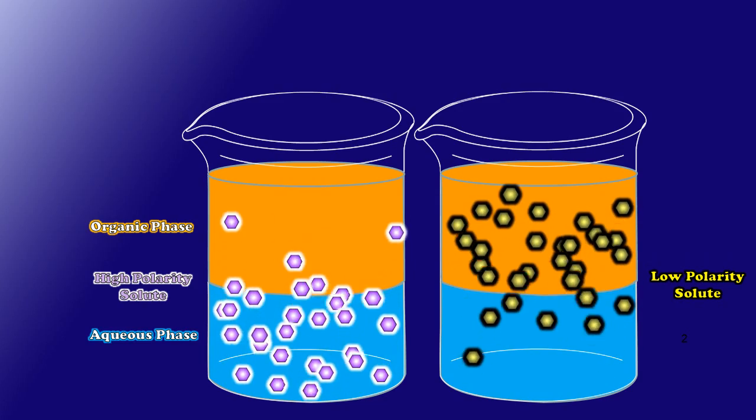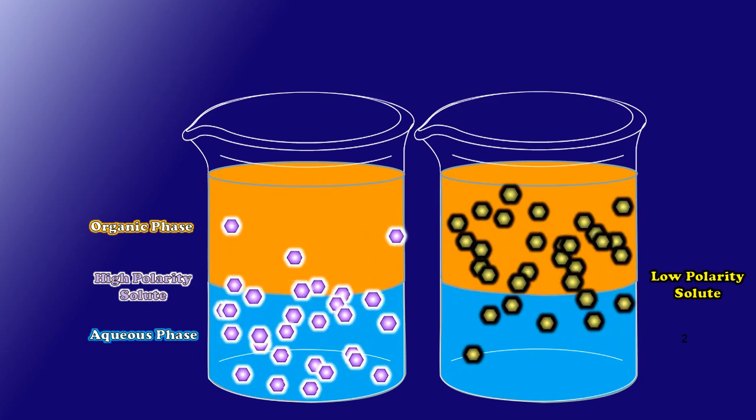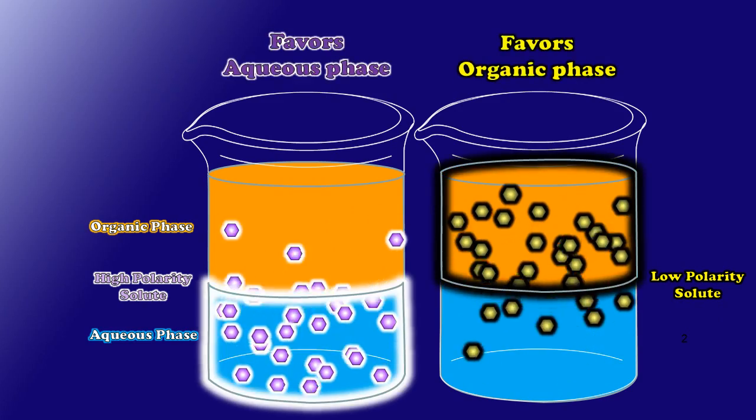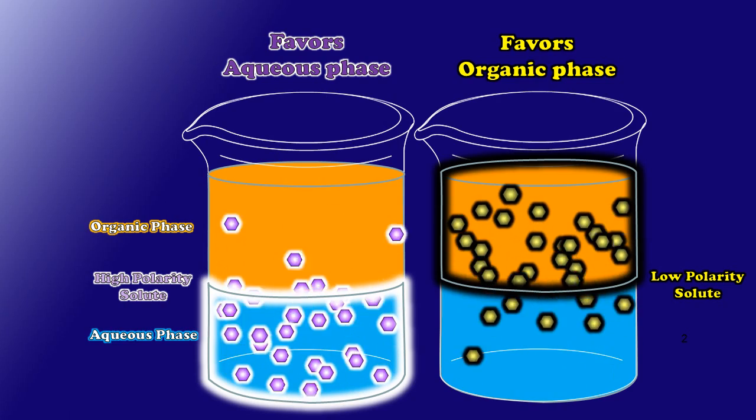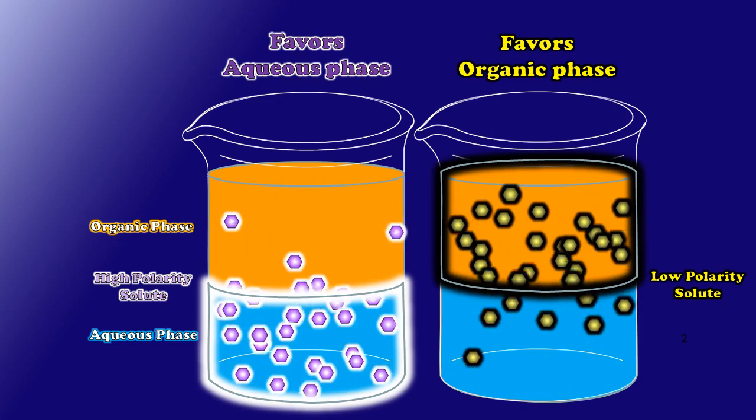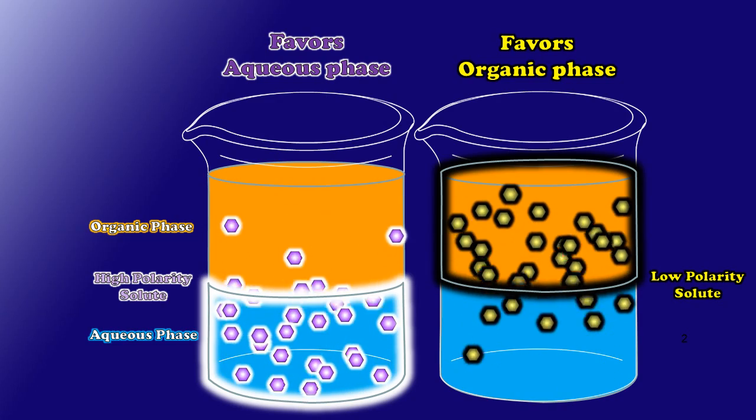And hopefully what you can see here is that my higher polarity solute is concentrated more in the aqueous phase and my low polarity solute is concentrated more in the organic phase. This is a behavior that I can exploit to separate the two from one another.